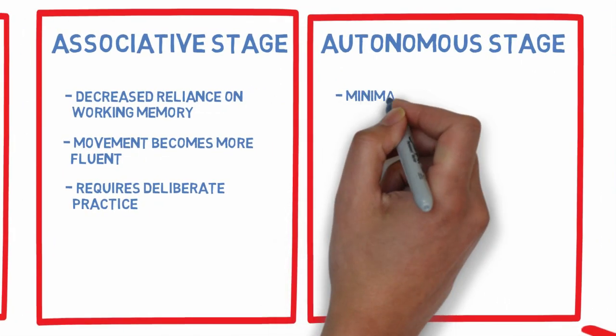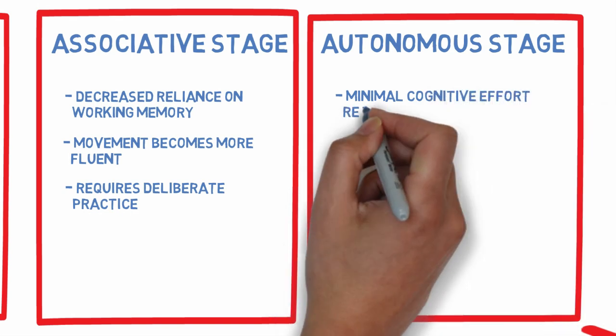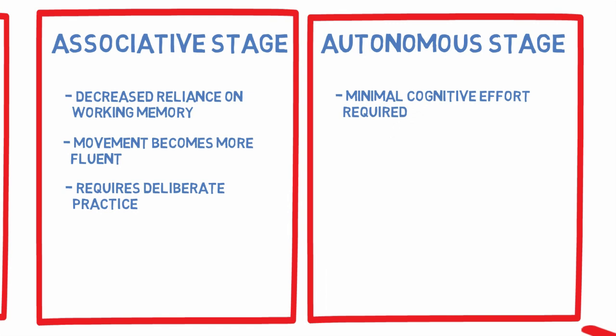Due to the high amount of deliberate practice, elite athletes operate in the autonomous stage and have typically over-learned skills, meaning they can be executed with minimal cognitive effort required.